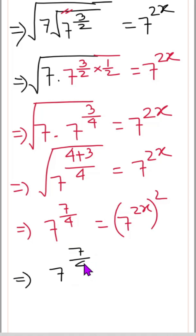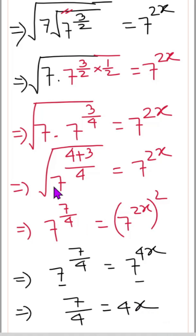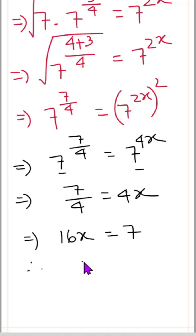Now 7 to the power 7/4 equals 7 to the power 4x. Both bases are the same, so the powers must be equal: 7/4 equals 4x. By cross multiplication, 16x equals 7, so x equals 7/16.